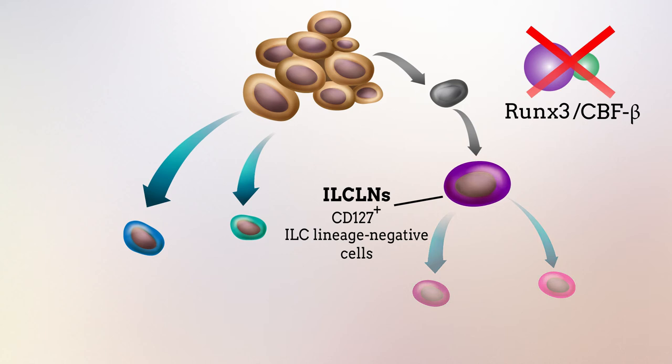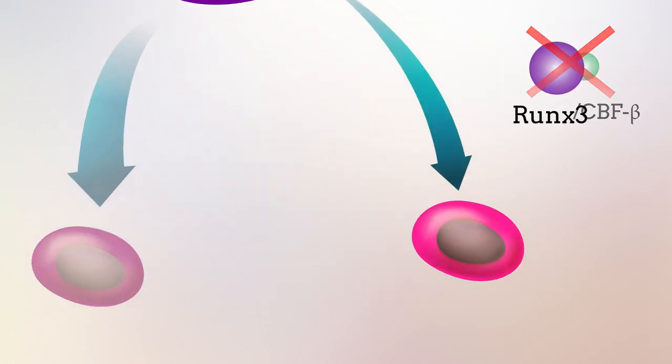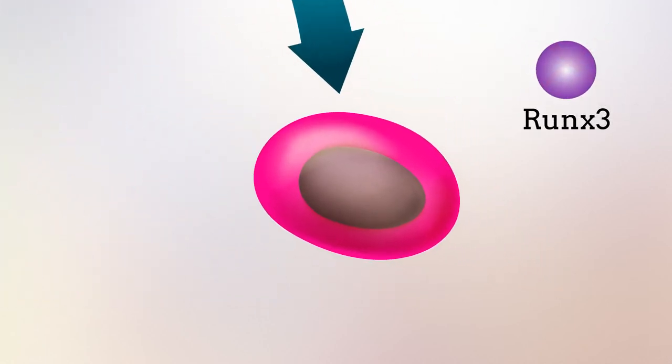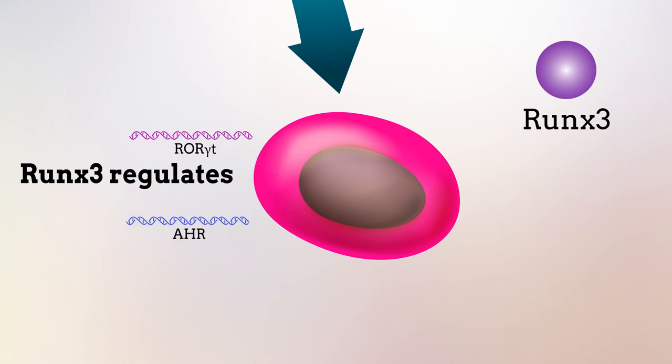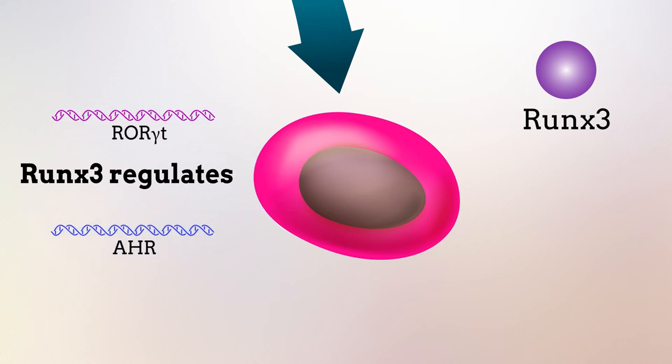However, the lineage specification to that point remained normal. The researchers also observed that RUNX3 regulates two genes that are important for ILC3 identity, further supporting a role for RUNX3 in the final step of ILC3 specification.